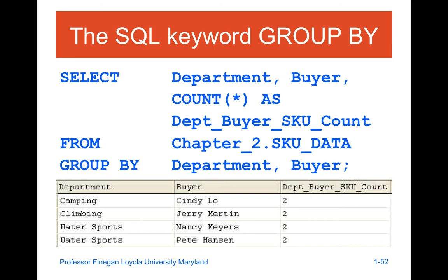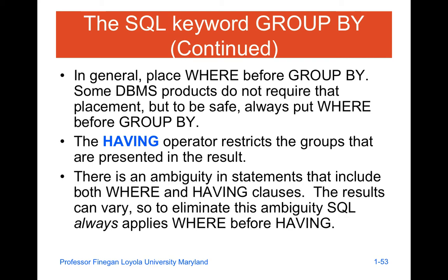GROUP BY is critical when looking at how you're going to show results — it looks from a department and buyer perspective and will go with ascending order unless otherwise specified. You have to place WHERE before GROUP BY. HAVING will always result in the groups presenting the result, and there can be some ambiguity in statements that involve both WHERE and HAVING. Always put WHERE before GROUP BY and always put WHERE before HAVING.